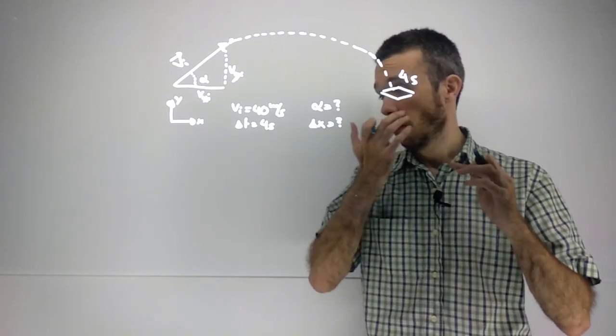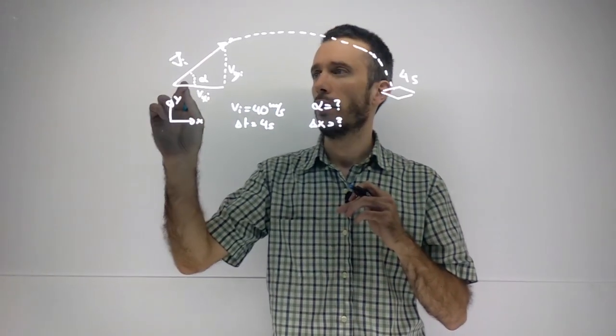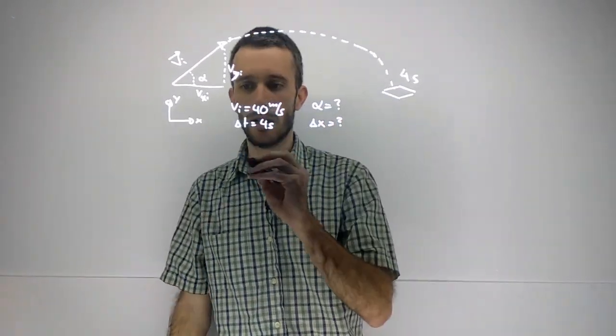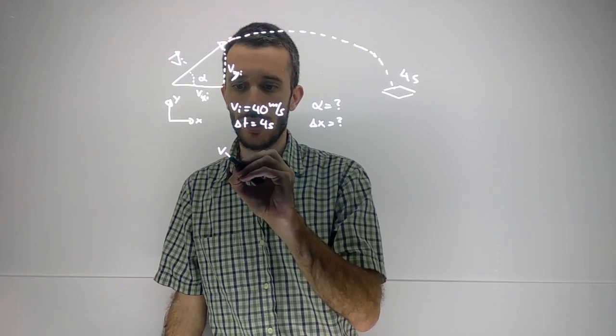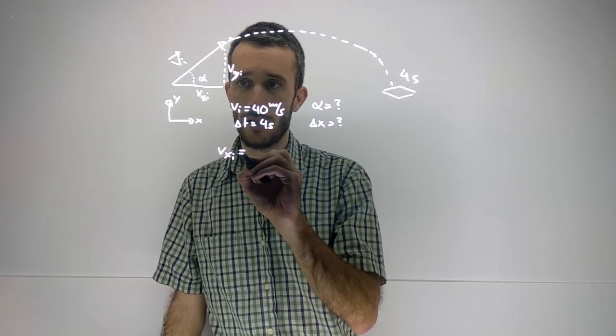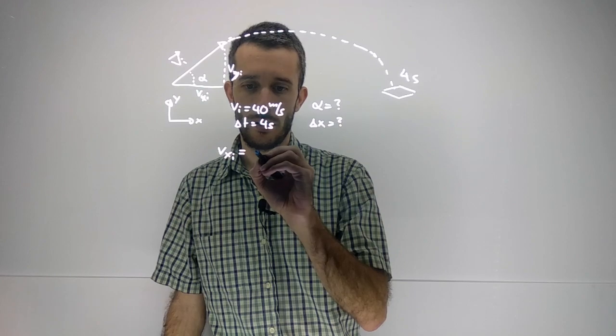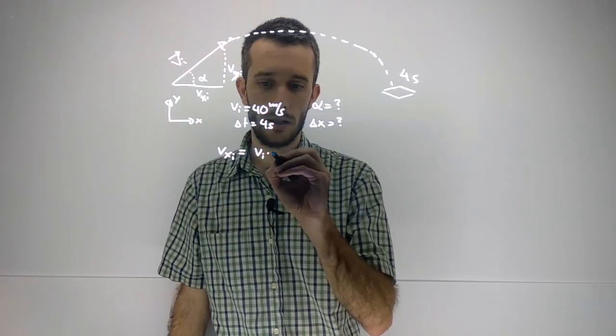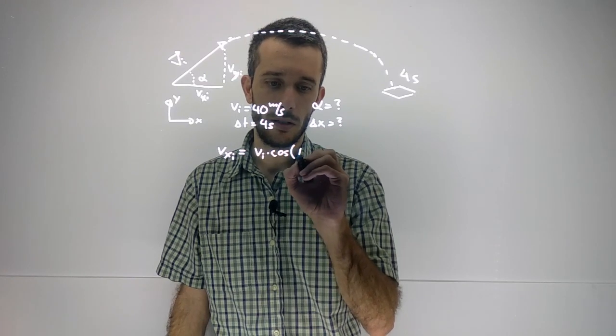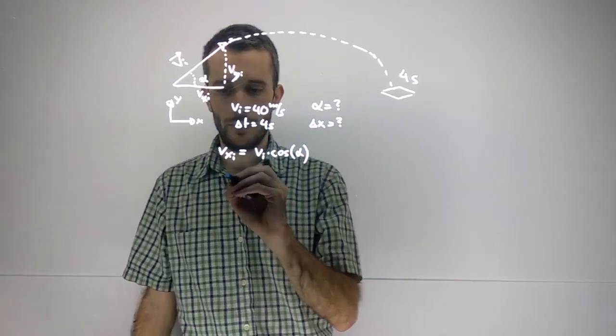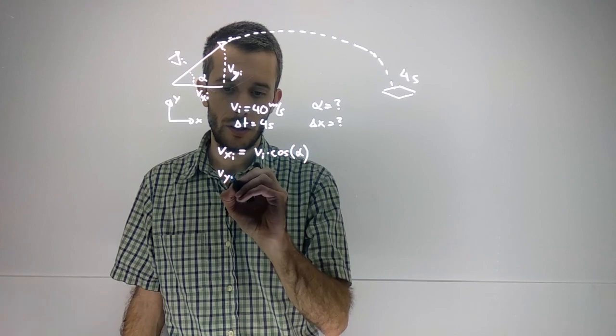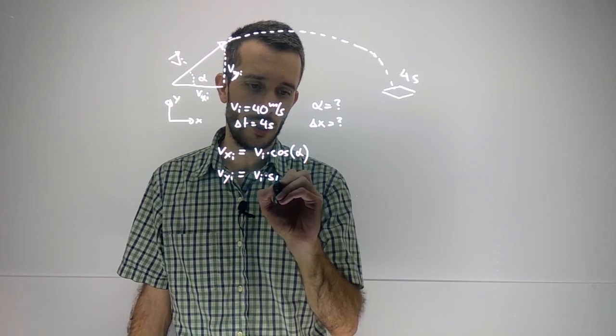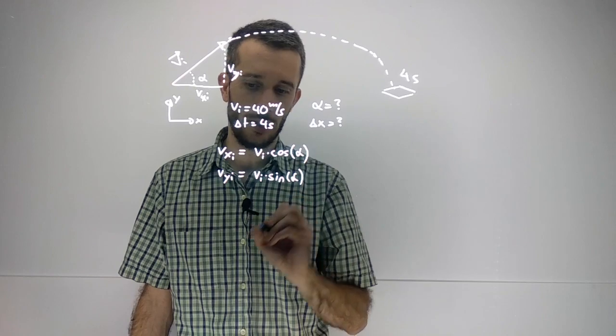Now, first of all, what we can do is split up the initial velocity into its x and y components. So we have vₓ initial is v initial times cos of the angle, and we have vᵧ initial, v initial times sine of the angle.